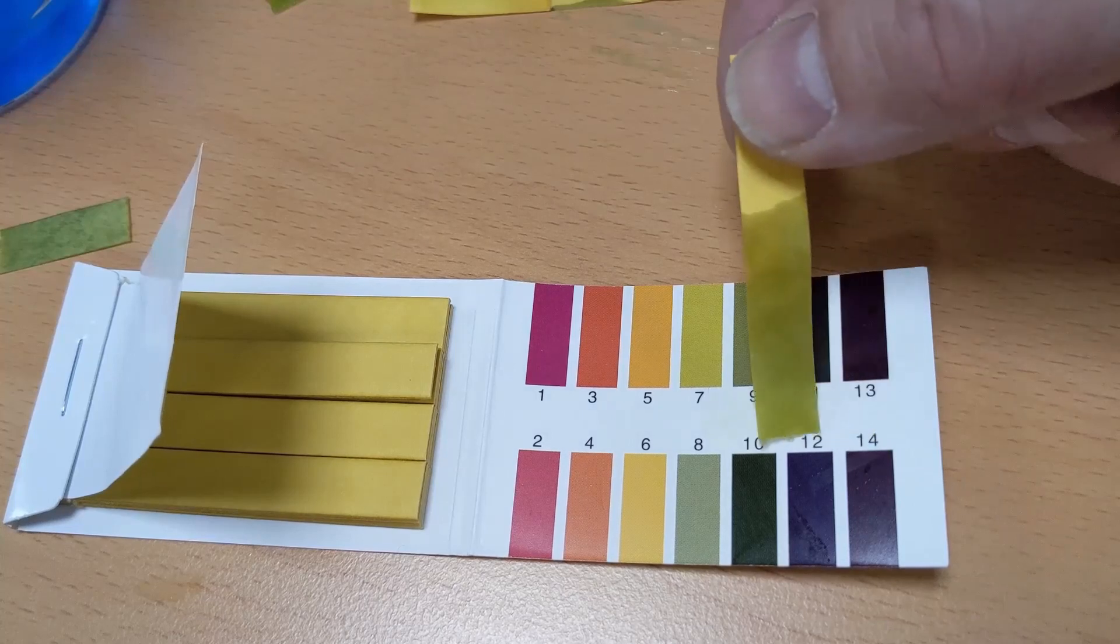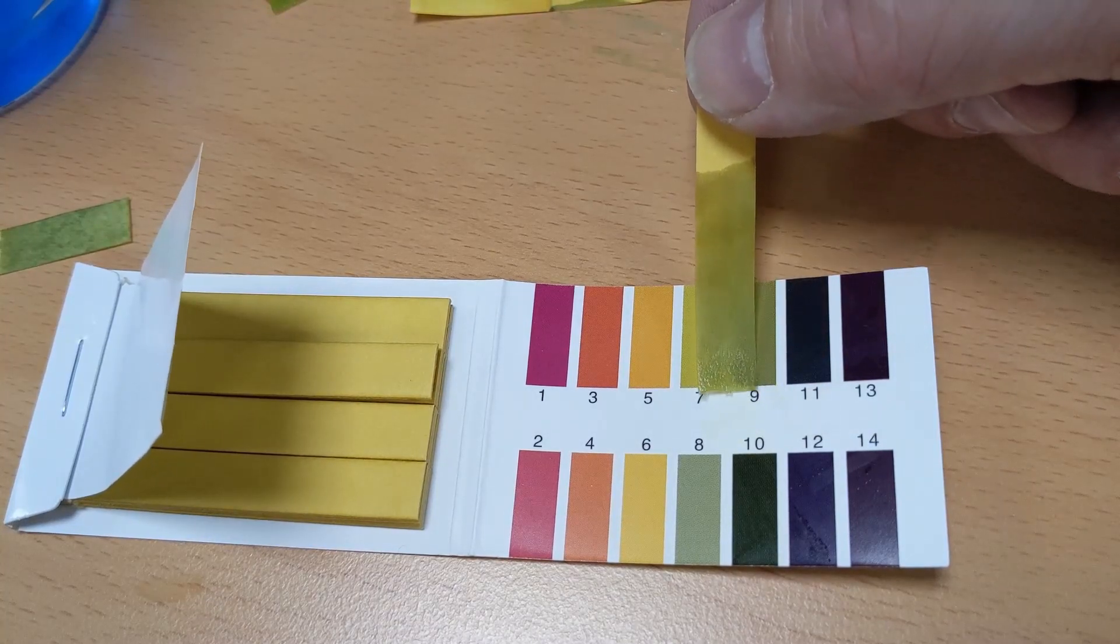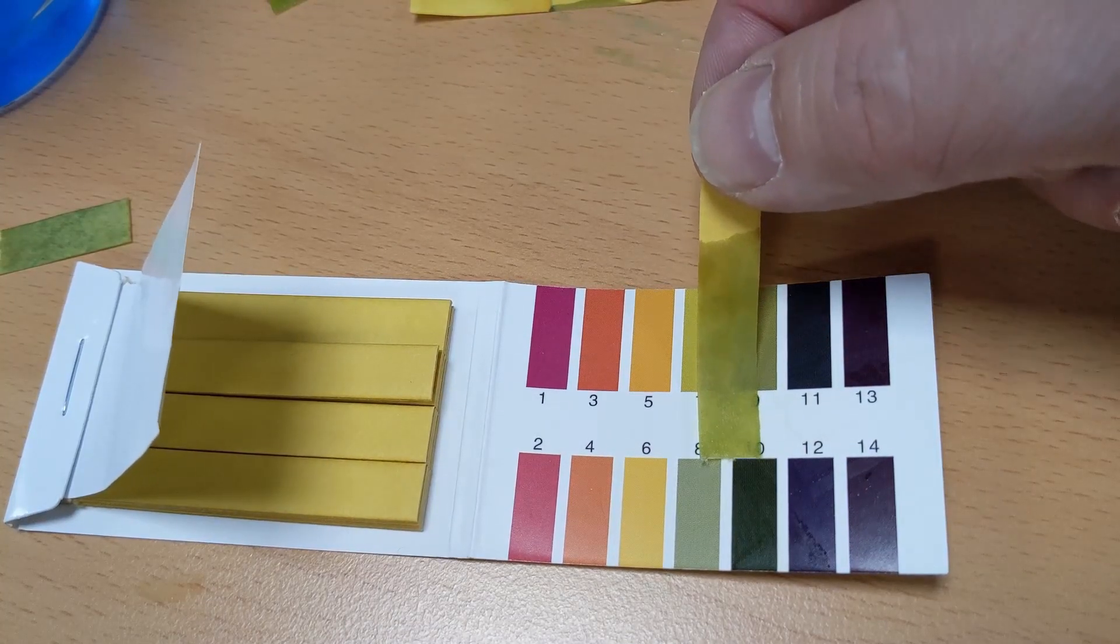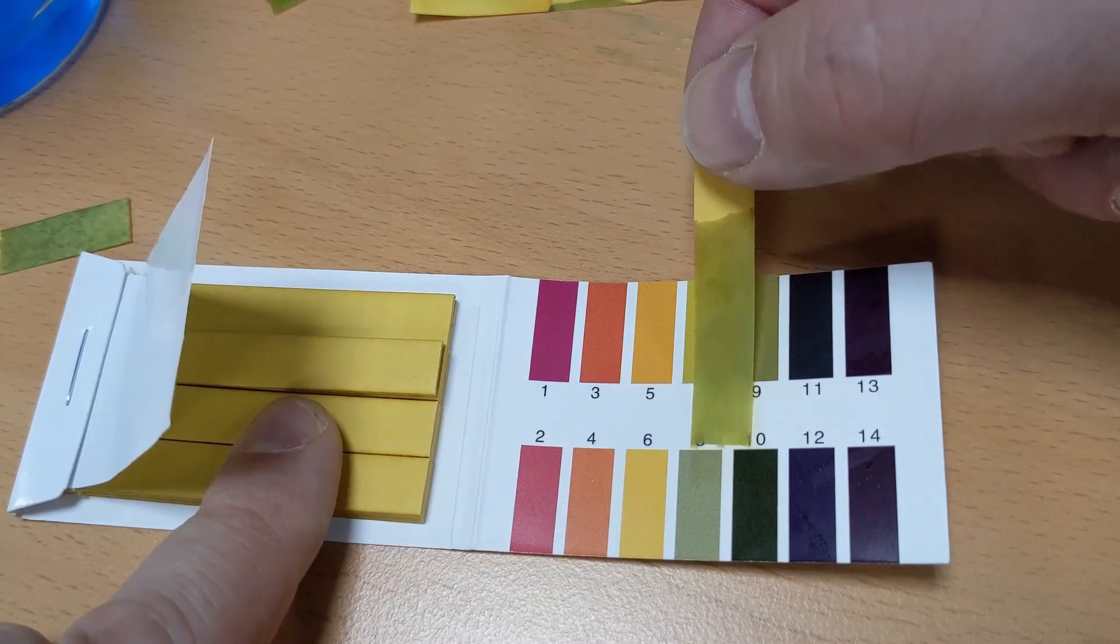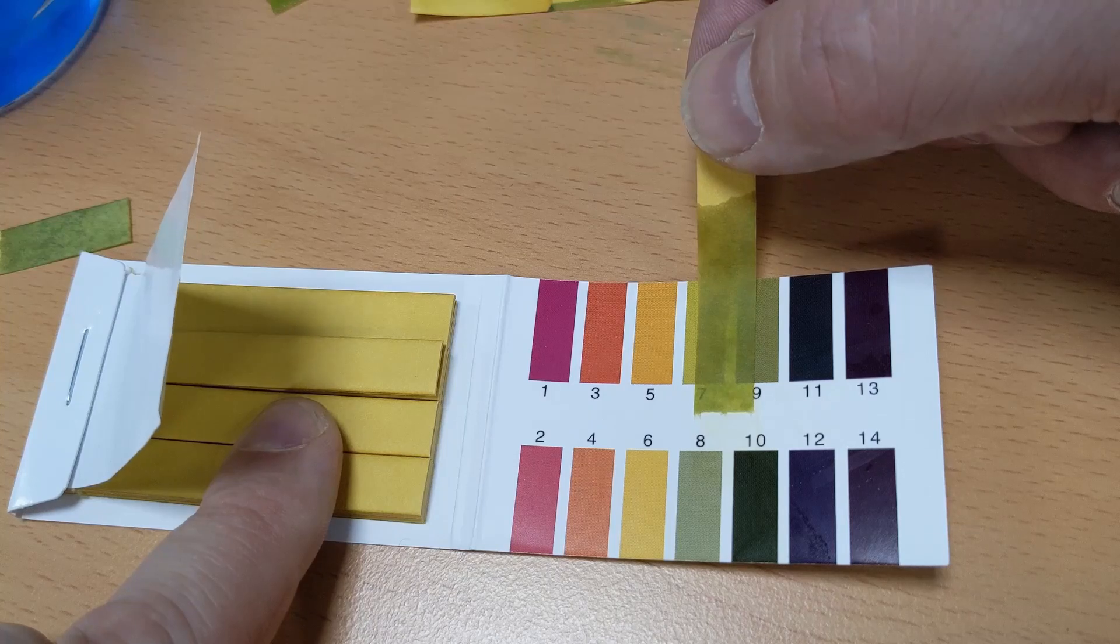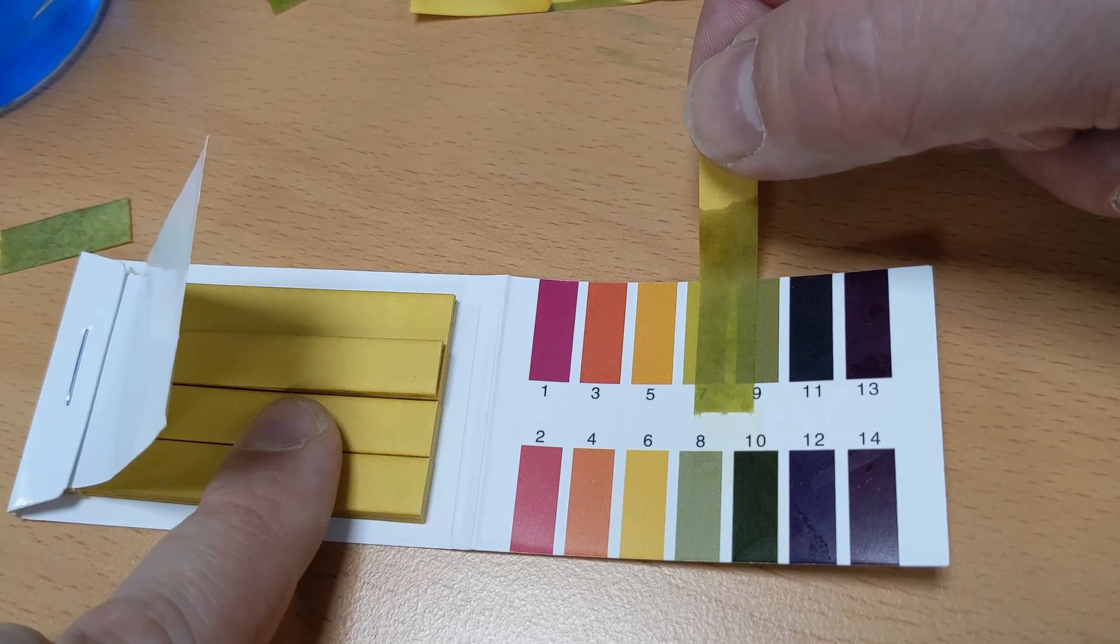We can also measure the pH level of that water, just giving us a good insight as to the water quality level. So we've got an idea what it looks like, we've got the glycol level, and we've also got an idea of the pH level. This gives us a nice overall insight into the water quality.